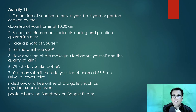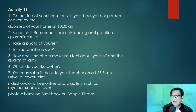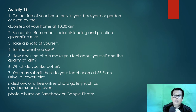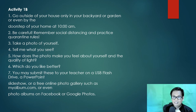Let's proceed with Activity 1B. In Activity 1A, you took a photo of yourself inside the house using available artificial lights. Now for Activity 1B — number one, go outside of your house, only in your backyard or garden or even by the doorstep of your home, at 10 AM ideally. But since our class is during the afternoon — 1 PM to 3 PM — the light at this time is very bright outside.